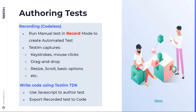Testim allows you to author a test using recording, which is fast authoring without using any code. Testim also allows you to create tests by writing code using Testim's test development kit. You can create automated tests by running your test manually in record mode, and Testim captures keystrokes, mouse clicks, drag and drop, resize, scroll, and other basic interactions. If you're trying to create a test using code, you can use JavaScript, and you can also export a recorded test into JavaScript code using Testim's TDK.